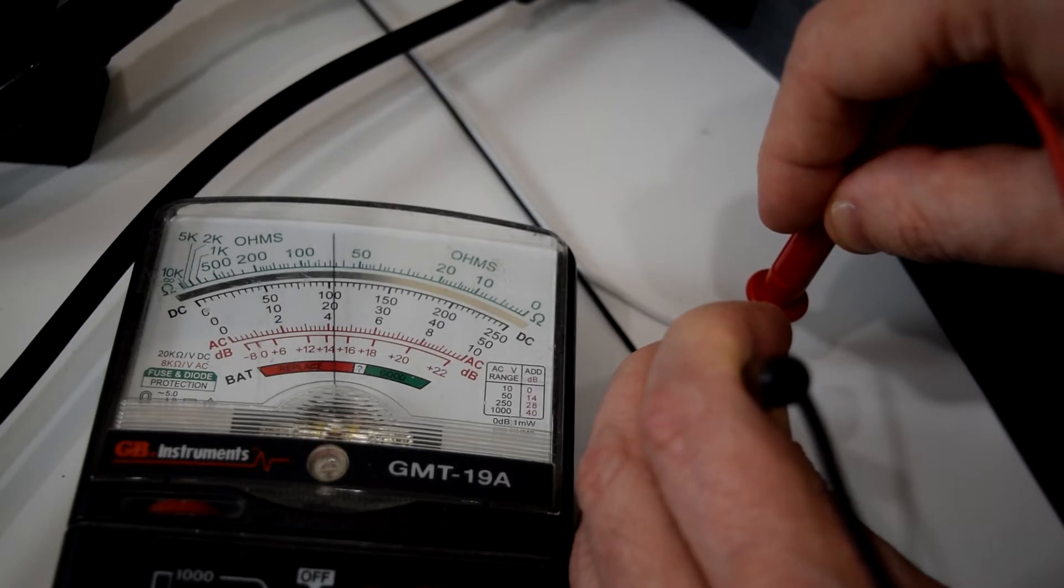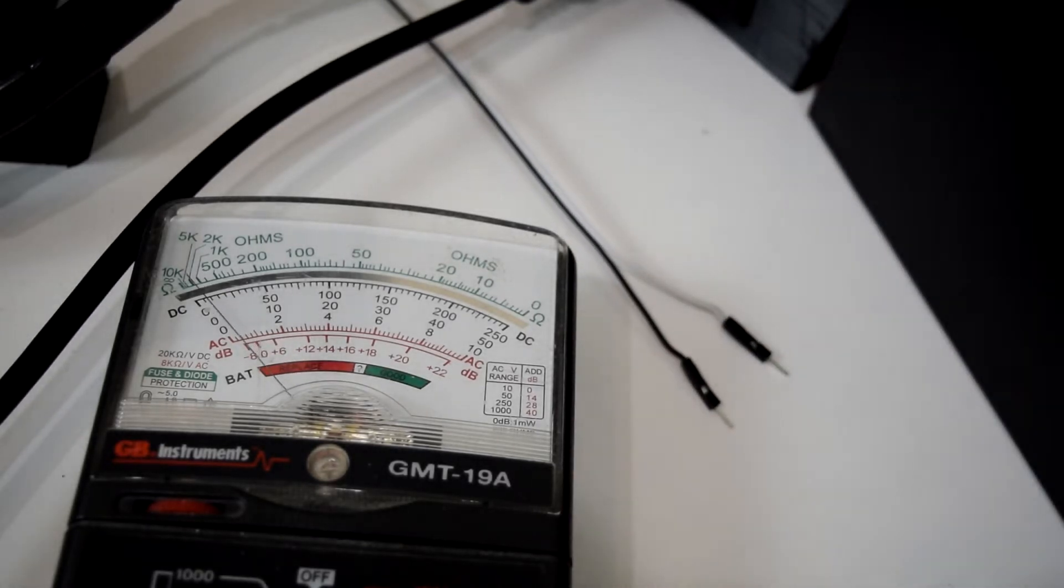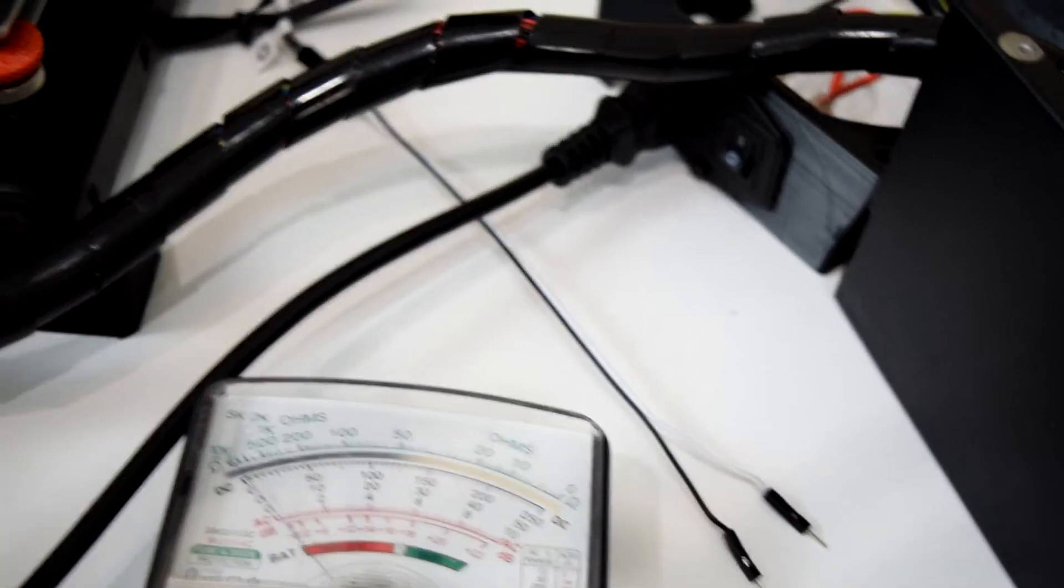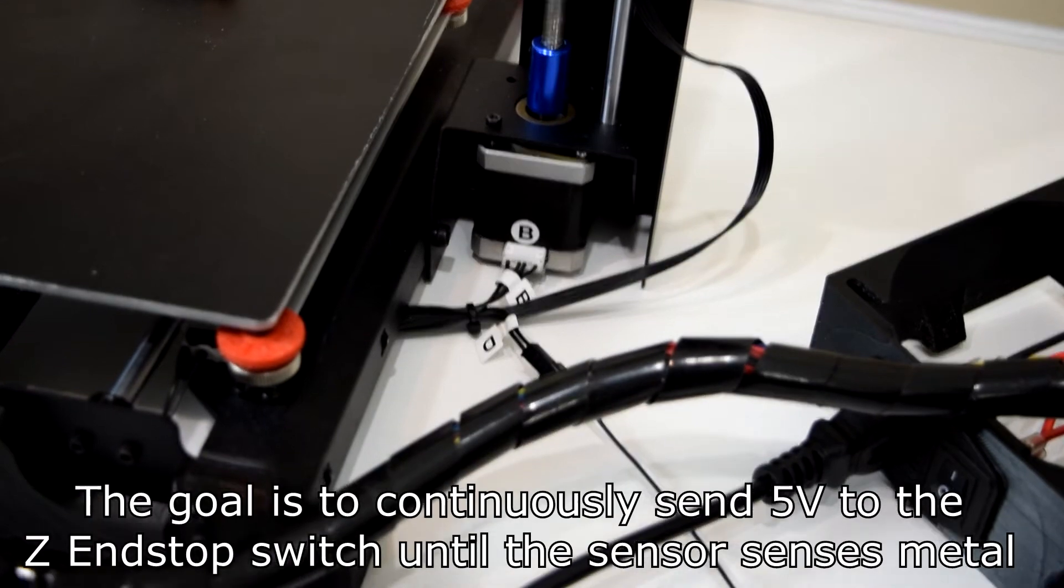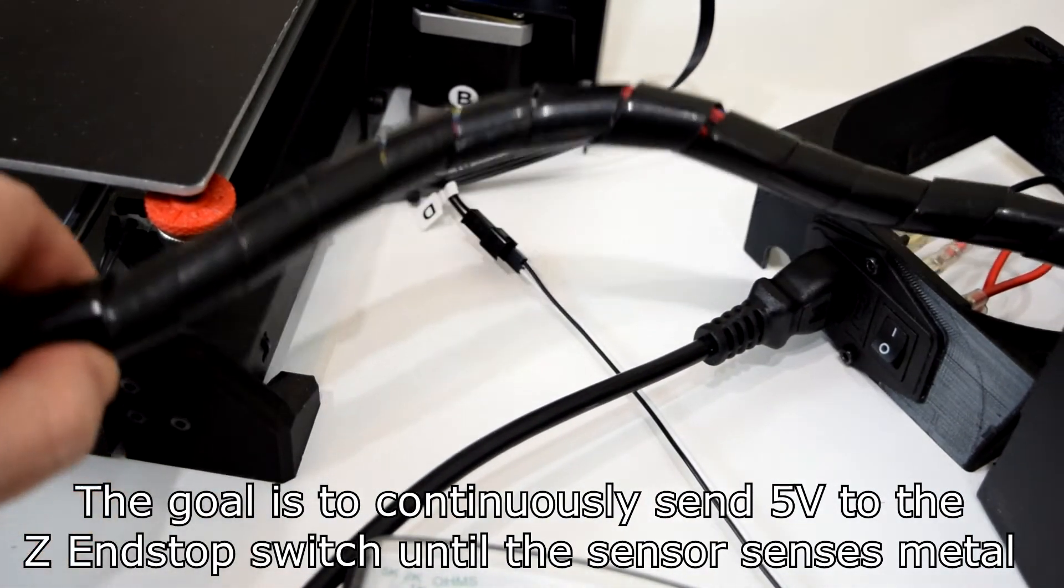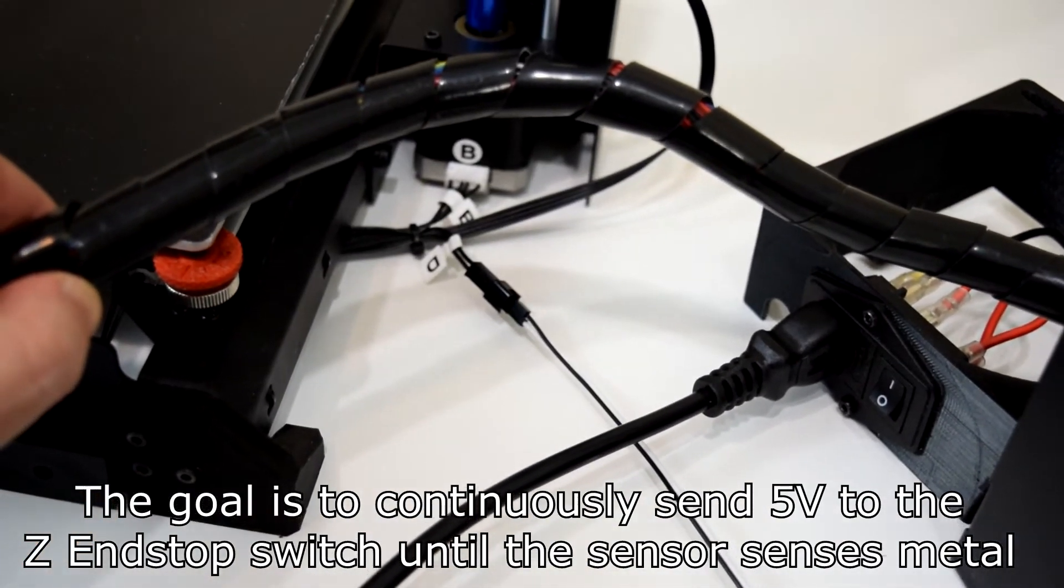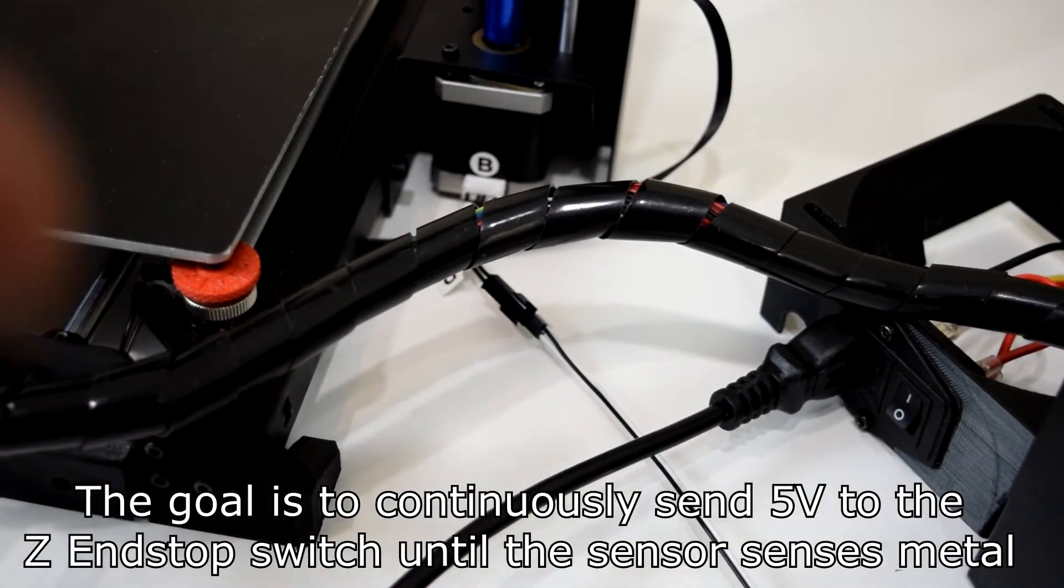If you take a multimeter and connect it to the two wires coming out of your z-axis end stop on your printer, you'll see the end stop is constantly pushing about 5 volts from one wire to the other. That means that's really your goal to get about 5 volts into the signal pin of your end stop whenever the sensor is not activated, and to cut off that 5 volts when it's the other way around.